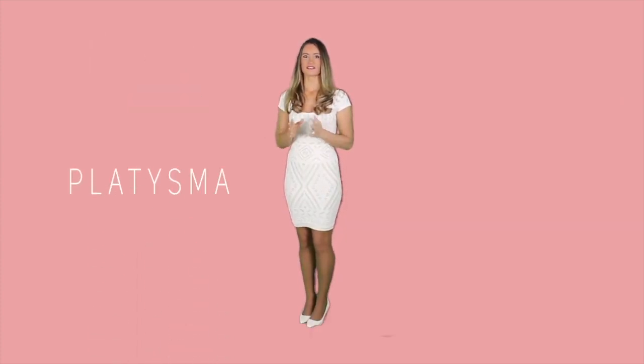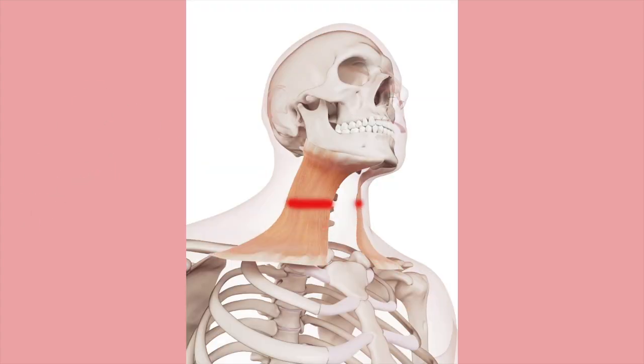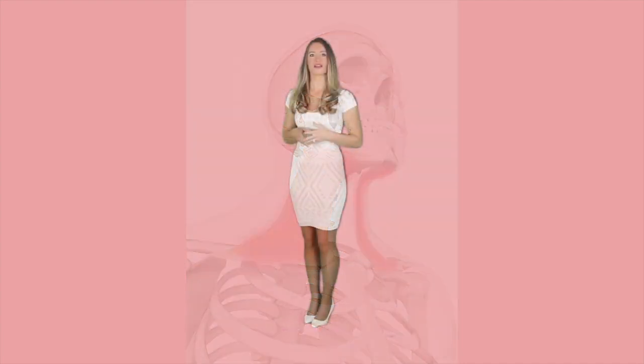Next, let's look at the platysma muscle. It is very thin, just like a sheet, and its fibers stretch all the way from the chest, past the neck, finally reaching the face. It assists in lowering the mandible and creates the pouting look.